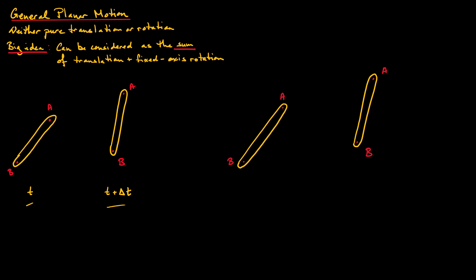We can define a few position vectors here. This one we define as dR_A, which is the displacement vector of point A. And this one we define as dR_B, which is the displacement vector for point B. We can also define a vector going from A to B, which we call R of B with respect to A — that's just a relative position vector, as we used for fixed axis rotation.